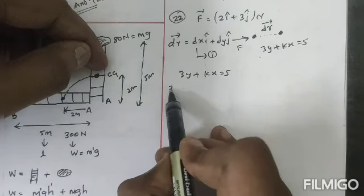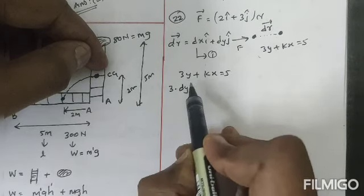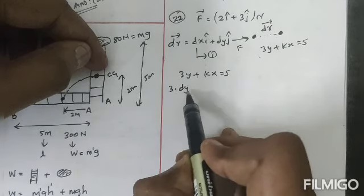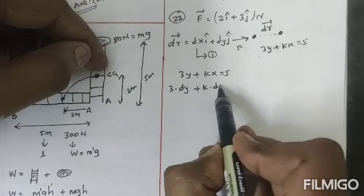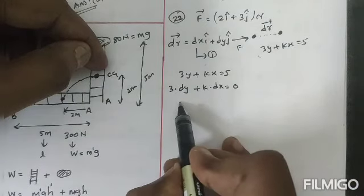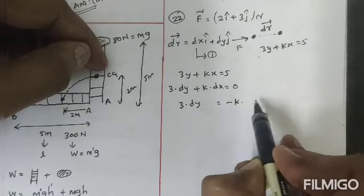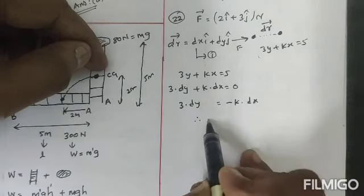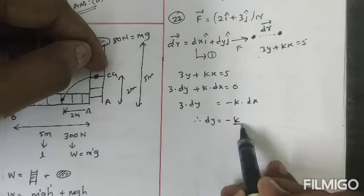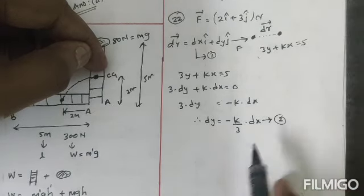U into dv plus v into du. Y into constant, constant differentiated is 0, so 3 into dy only we can get. k into dx is equal to constant differentiated is 0. Therefore 3 into dy is equal to minus k by 3 into dx. This is considered as equation number 2.